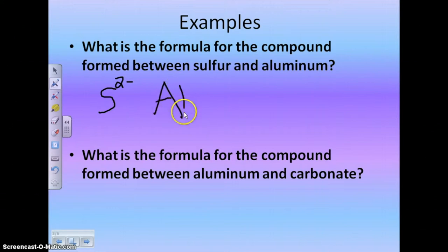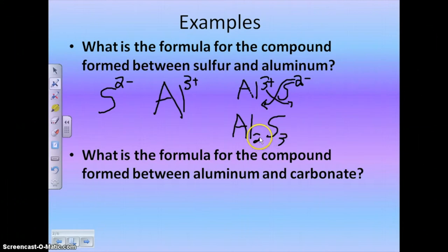And then we have aluminum, that's Al. And aluminum is in the 3 plus column. Then we're going to put the positive one first, so we want aluminum first. And then we have sulfur second. And then we're going to swap and drop our charges. So 3 is going to come down here, and the 2 is going to go over there. So we're going to end up with Al2S3. So that is our formula, Al2S3.